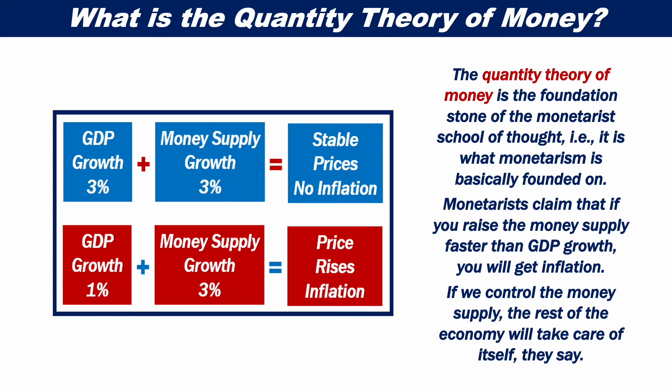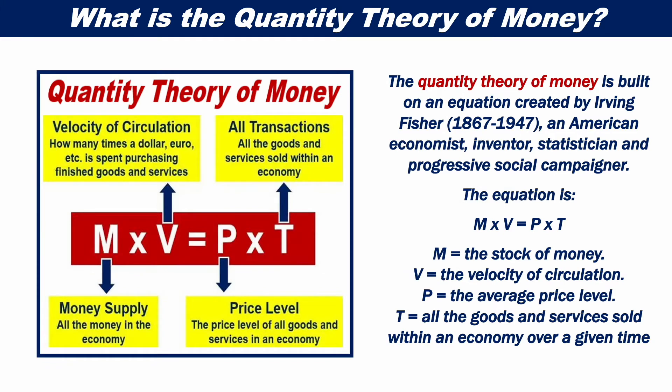If we control the money supply, the rest of the economy will take care of itself, they say. The quantity theory of money is built on an equation created by Irving Fisher, an American economist, inventor, statistician, and progressive social campaigner.